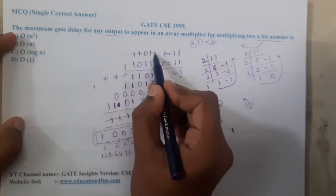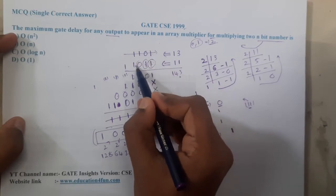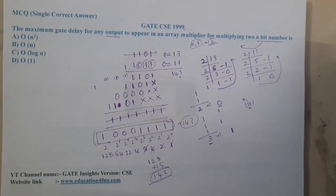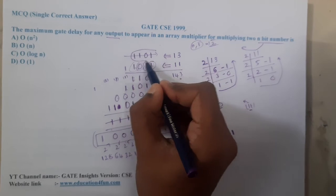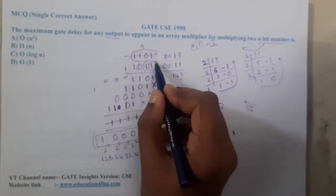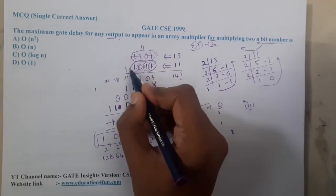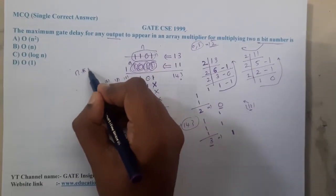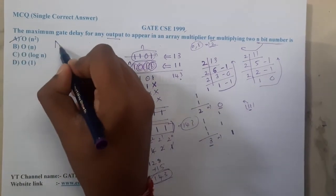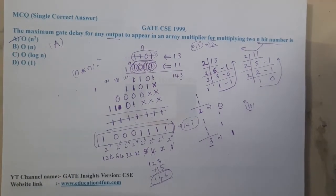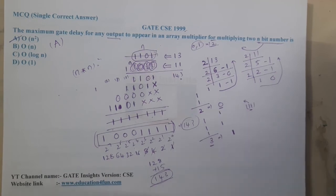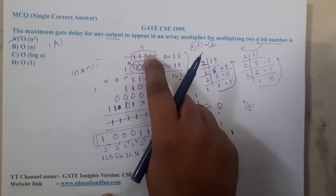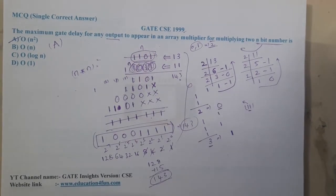So what exactly did we do here? We took one n-bit string and multiplied each and every bit with the other n-bit string, writing partial products and adding them. If the string length is n, you read it n times, and since the other string is also n bits, you perform n×n multiplications. That is nothing but O(n²). So option A — Big O of n² — is the correct answer.